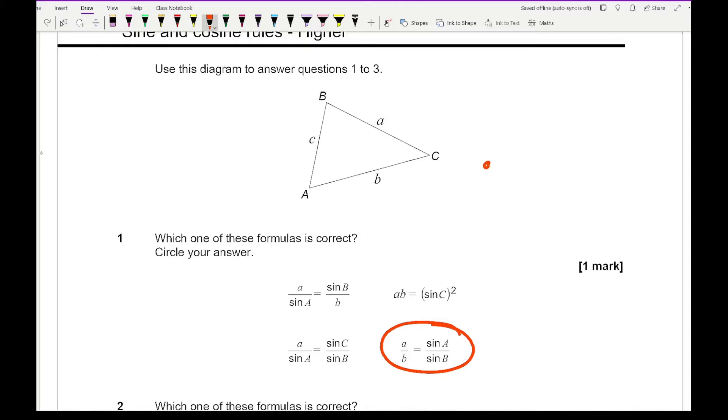Now the reason for this is if I just quickly do a bit of rearranging on this. So as I've got a fraction equals a fraction I can cross multiply. So I've got a sine b equals b sine a. Then if I take the a over to the other side or sine b over to the side and I also take sine a over to the side then what do I end up with? Well I end up with something that looks like this. And that is the correct formula for the sine.